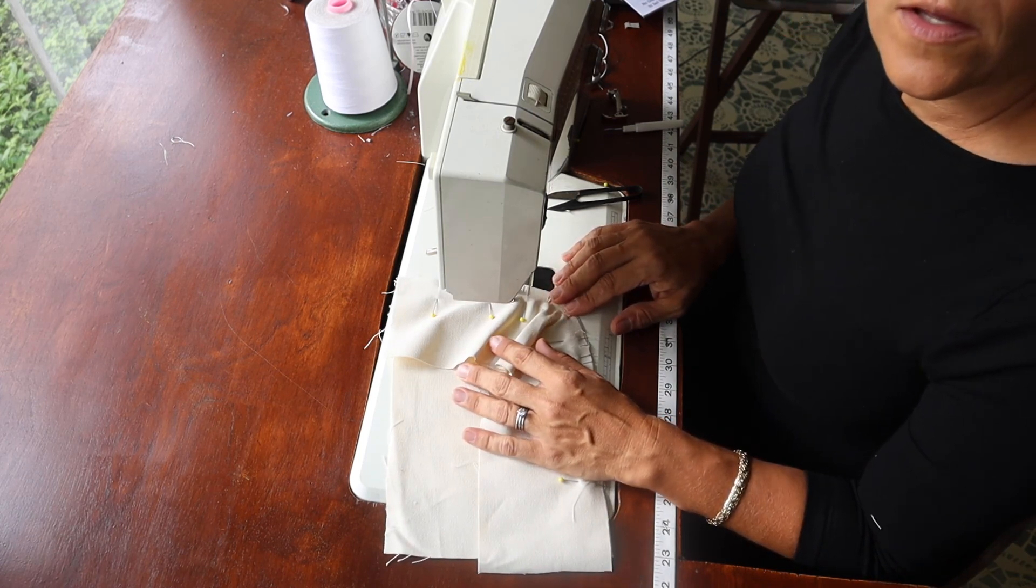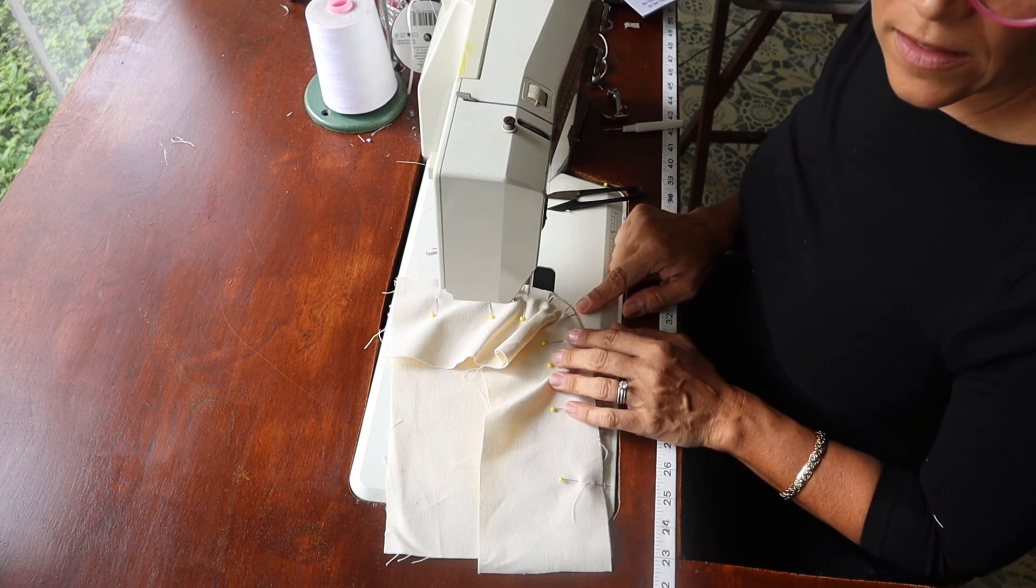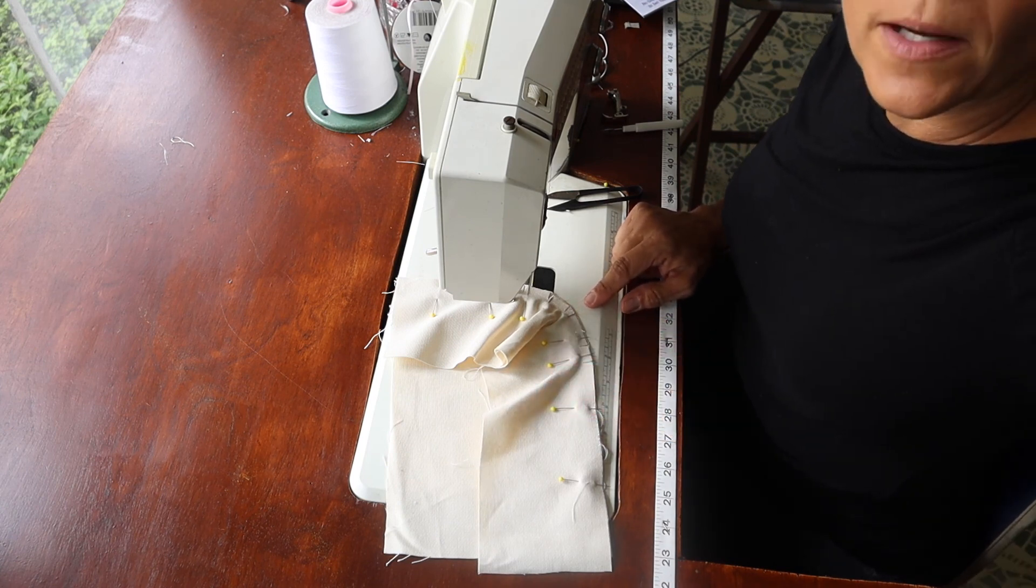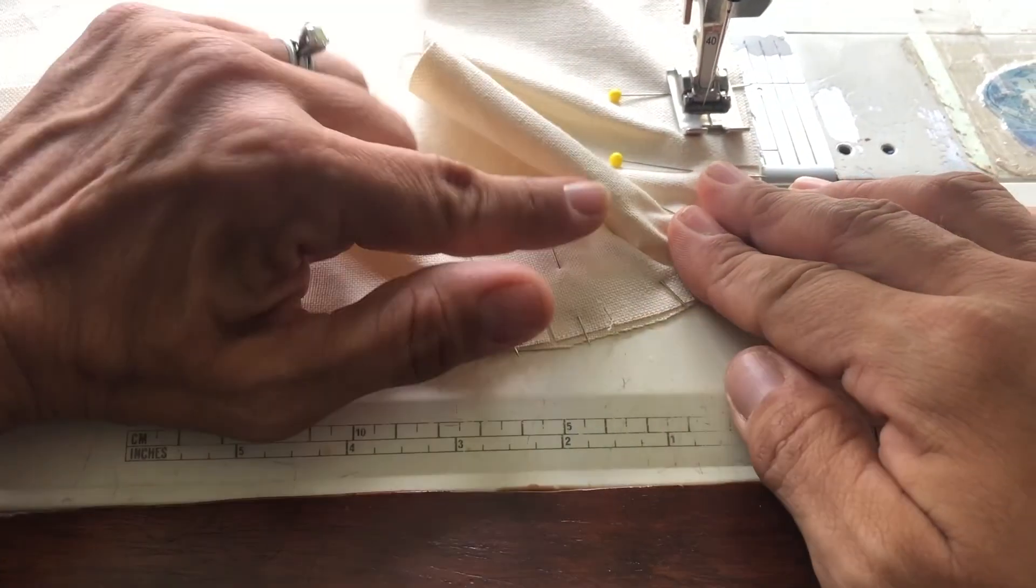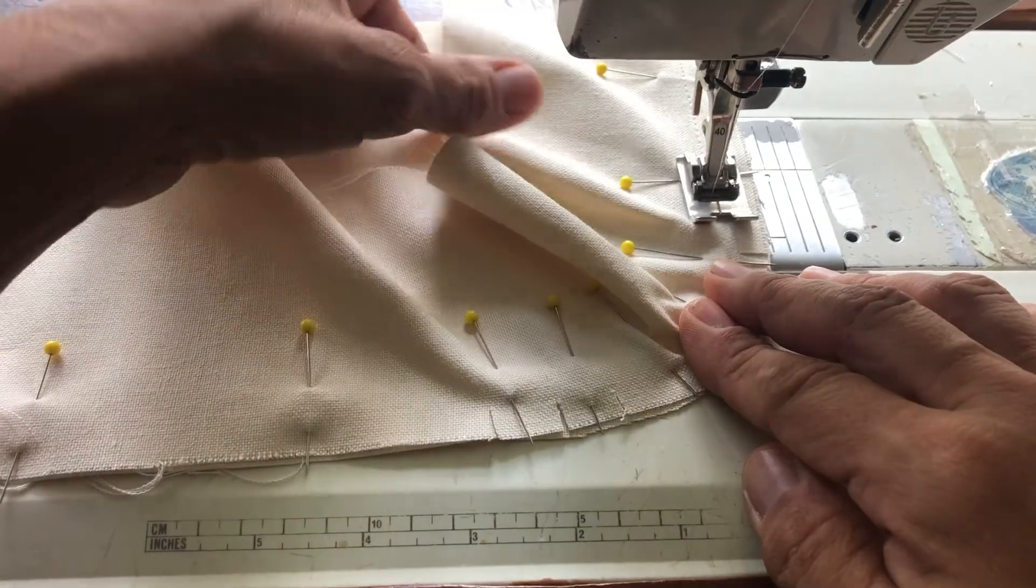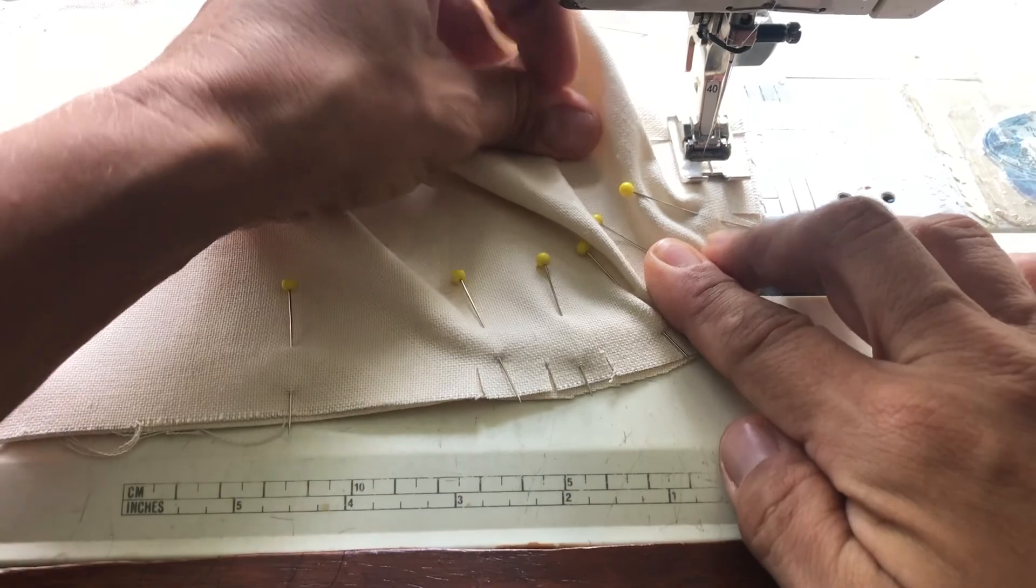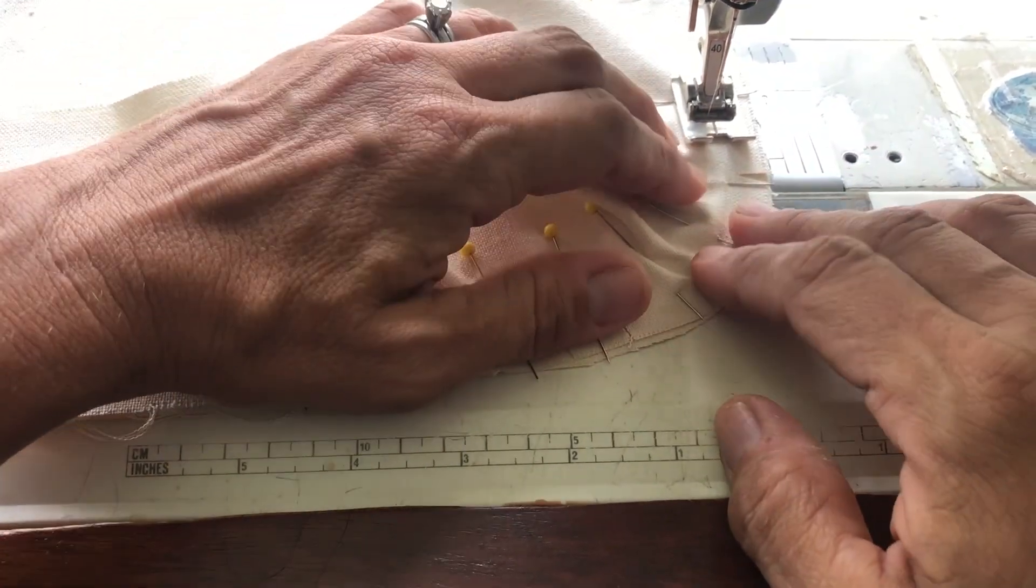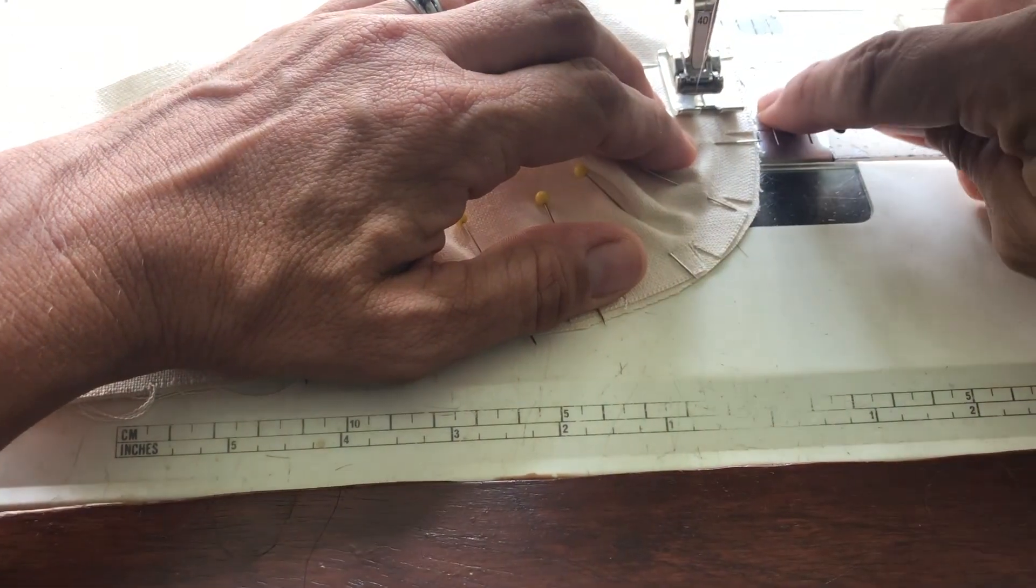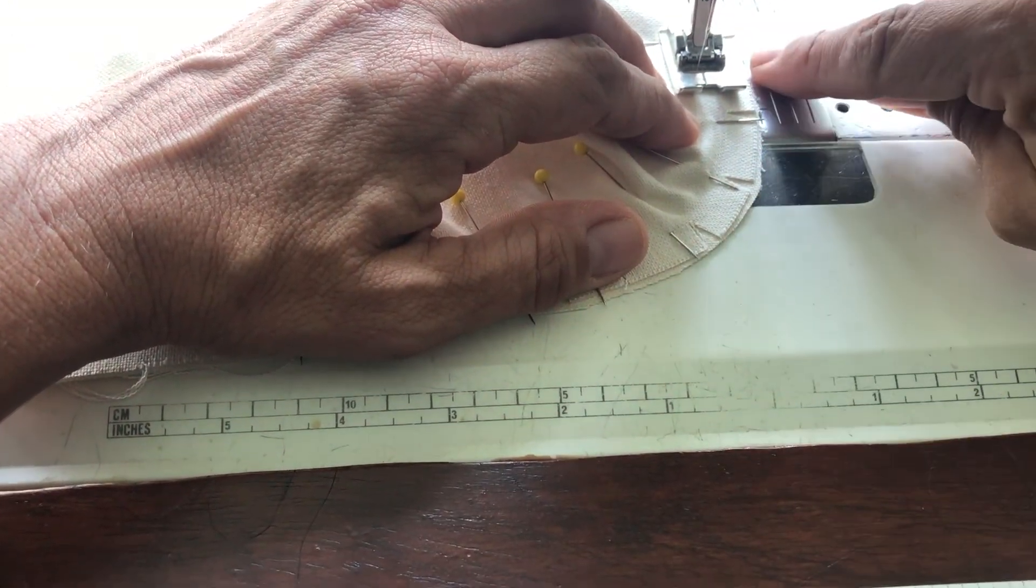Once we get to the curved part, this is where you want to start easing. When you start to get to the curved part, all these gathers here, you want to, as you're sewing, pull them away from your presser foot. So I'll show you as we go. And you want to make sure you keep your seam line nice and lined up, even as you're going around the curves.